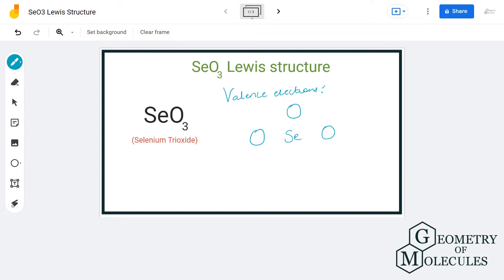Hi guys, welcome back to our channel. In today's video we are going to help you with SeO3 Lewis structure. It's a chemical formula for selenium trioxide, and to determine its Lewis structure we shall first look at the total number of valence electrons.